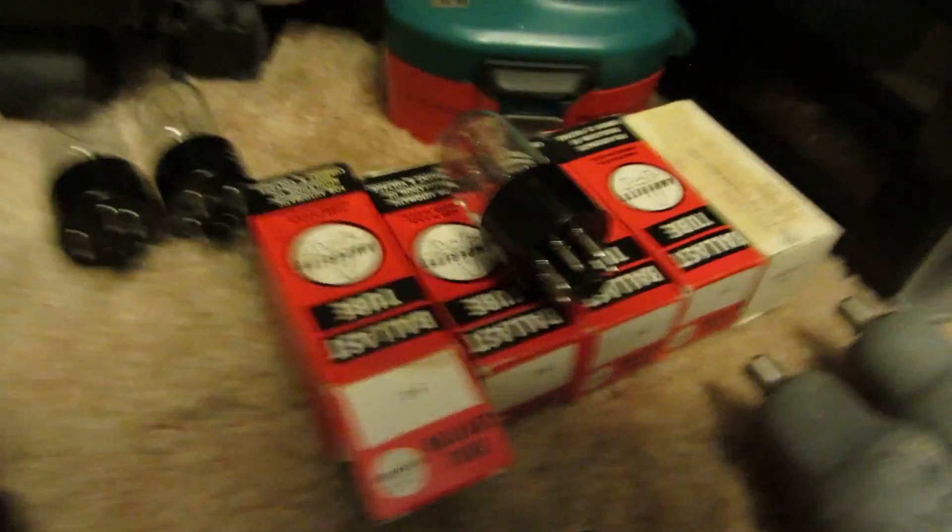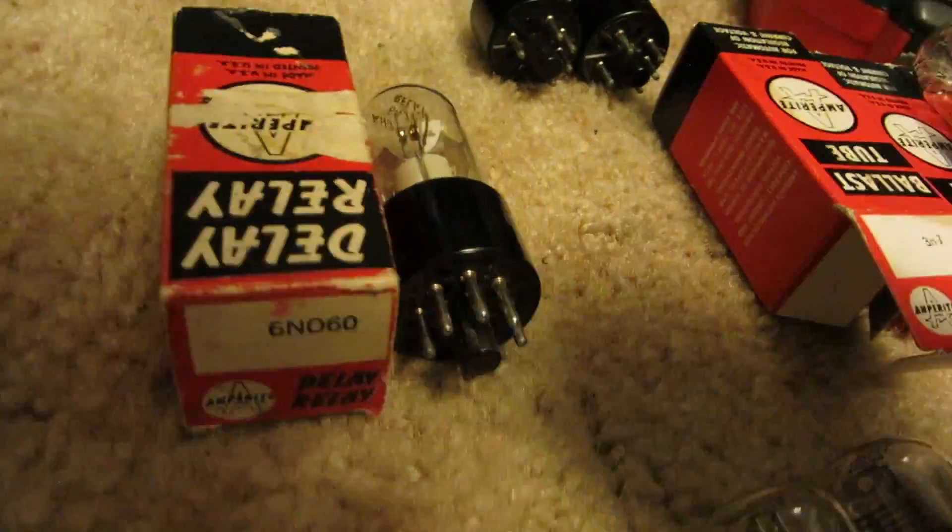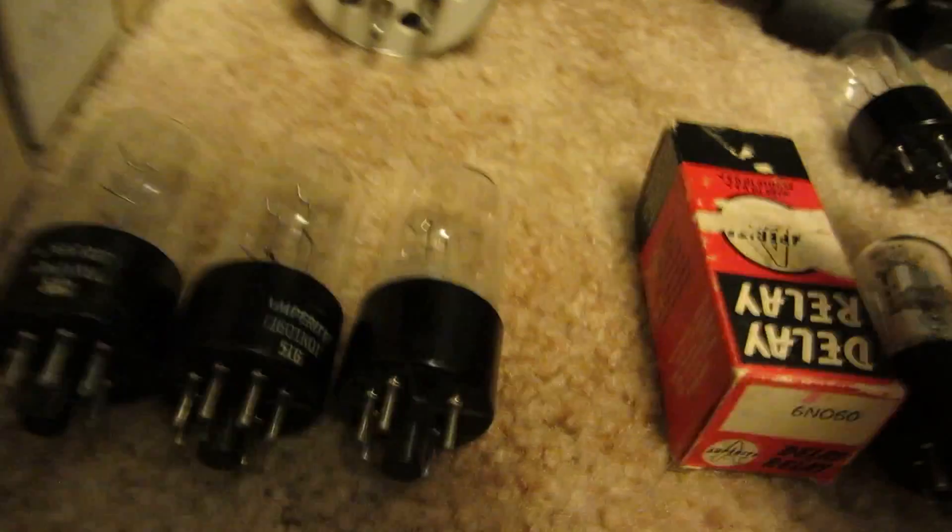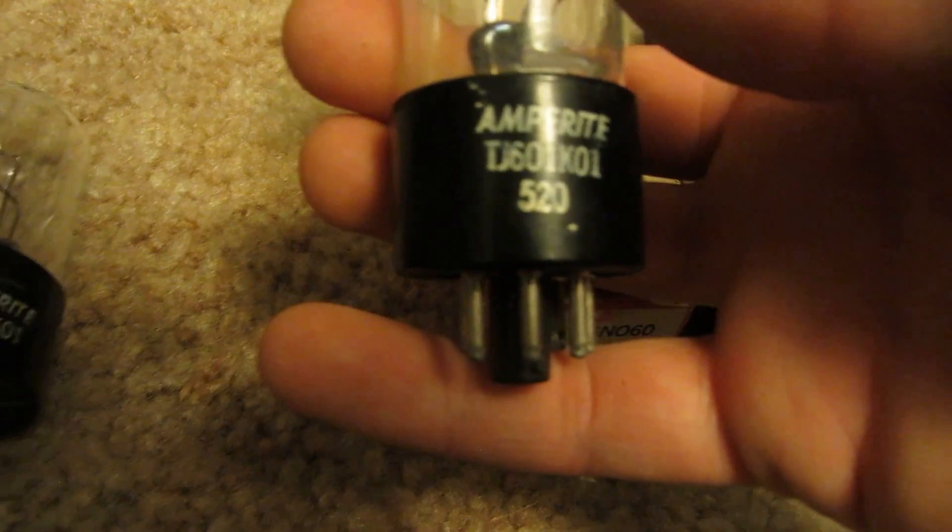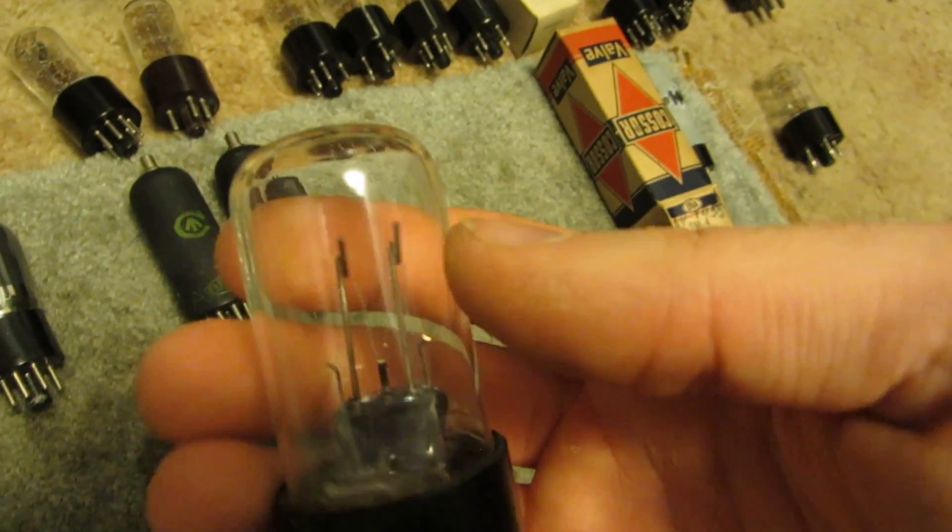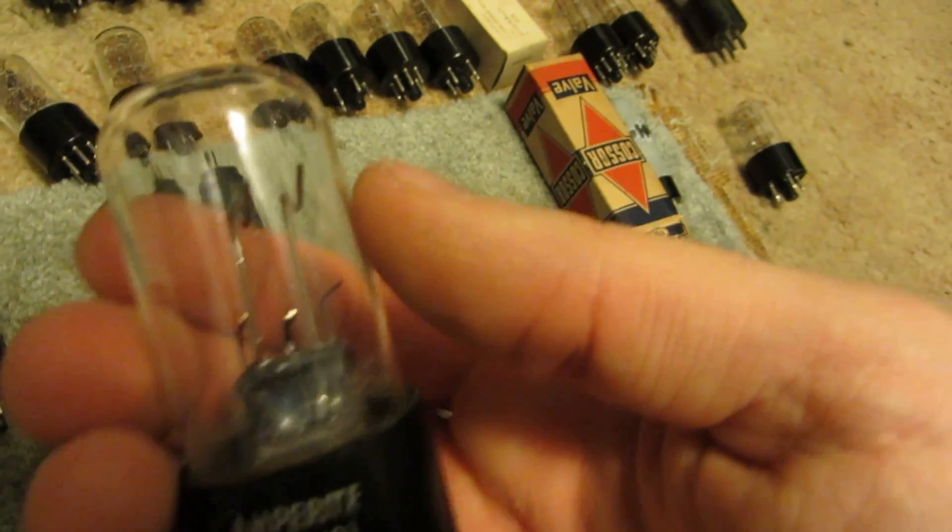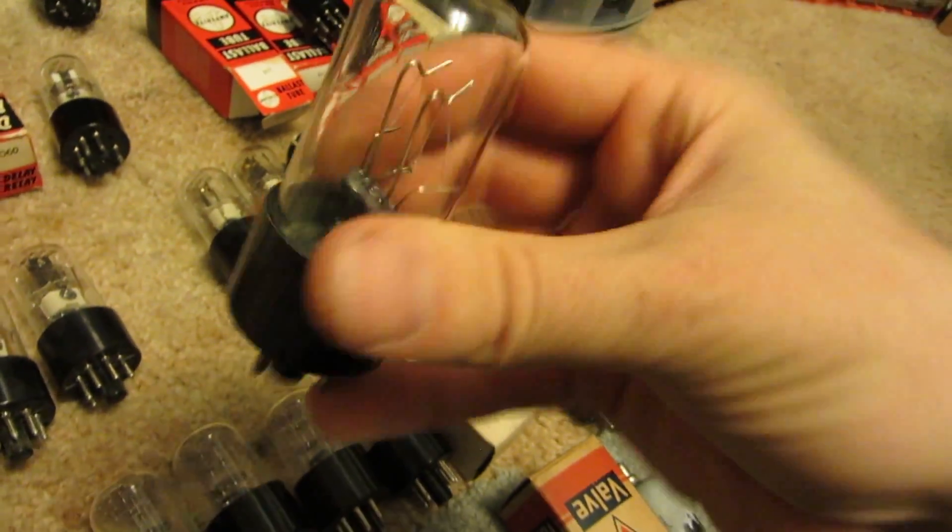And we got a bunch of 3-E-H-7's, same as the other ones. A 6-N-0-6-0, again another delay relay. TJ-601-K-01. Again it's a ballister relay. It looks like a bulb. There is a filament in there but it actually controls DC current I believe. Same with these guys up here, 6-H-6.